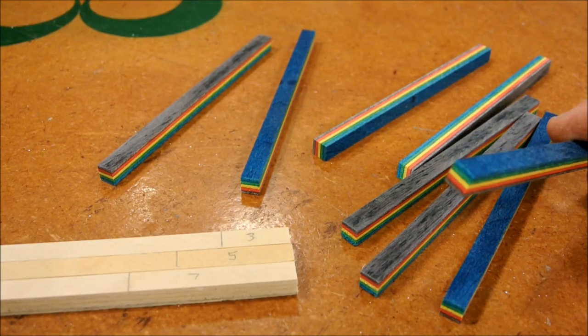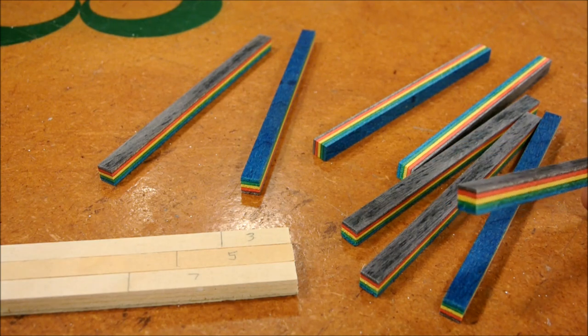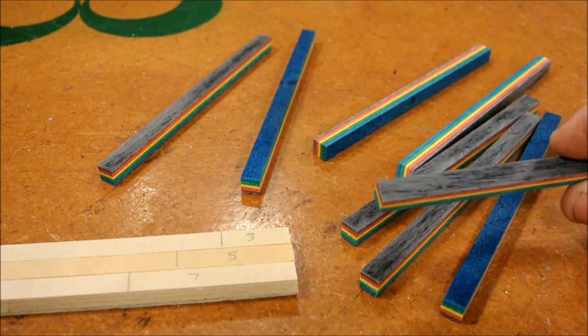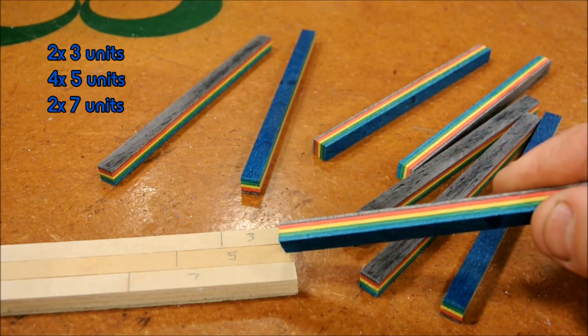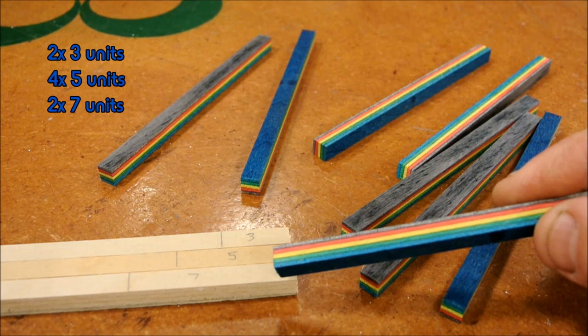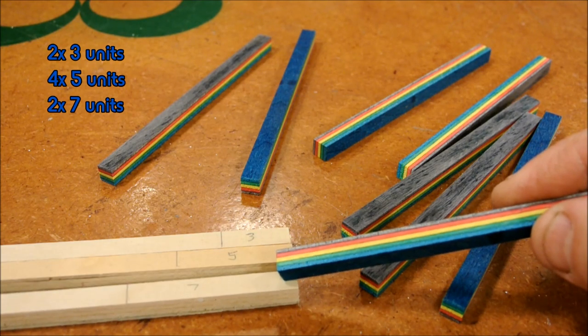Now if we pretend that this stock that I've just cut is one unit by one unit and one unit thick, I want to cut two pieces that are three units long, four pieces that are five units long, and two pieces that are seven units long.